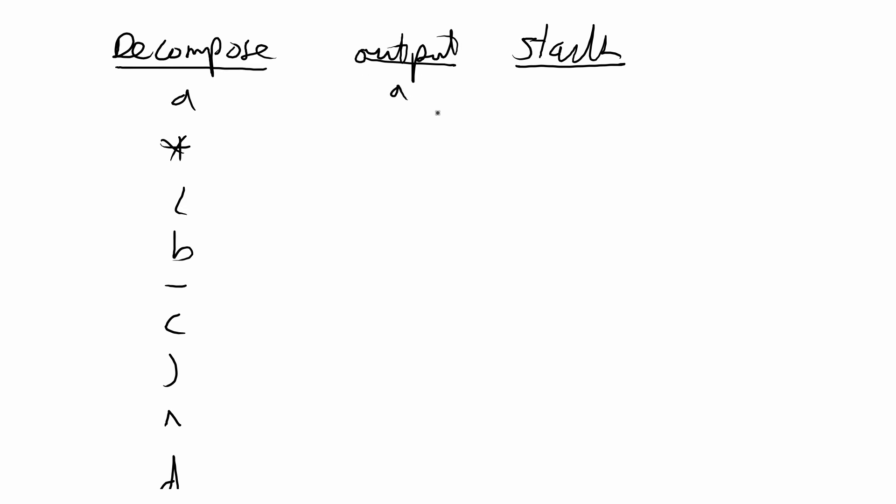With a, we're going to output that and our stack is empty. We have the star, so our output is still a, and then we push star to the stack. Open parentheses, we're going to do the same thing. Now our stack has two operations.